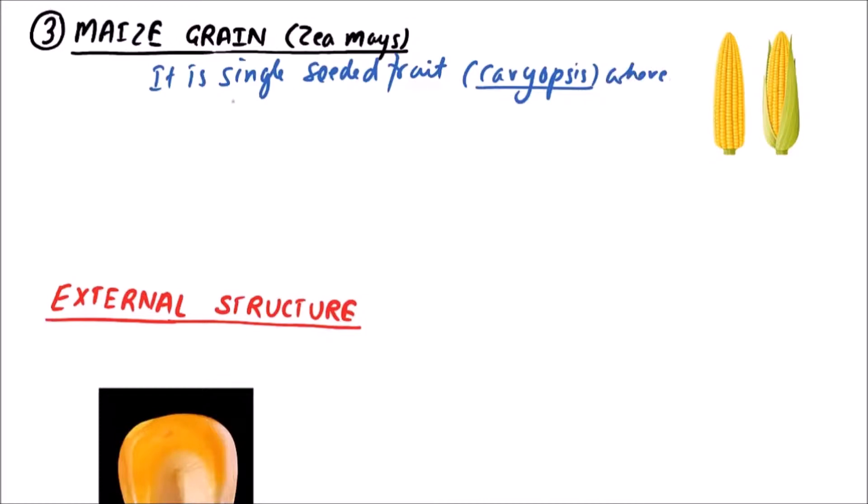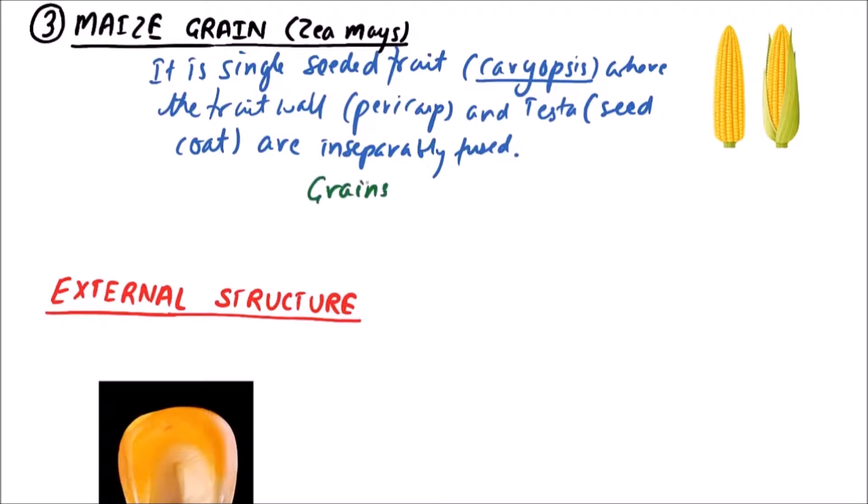In karyopsis, the fruit wall that is pericarp and testa, which is the seed coat, are inseparably fused. Grains are produced on a large and swollen peduncle that is called cobb.